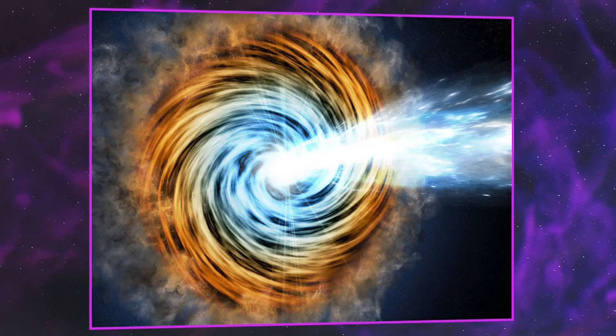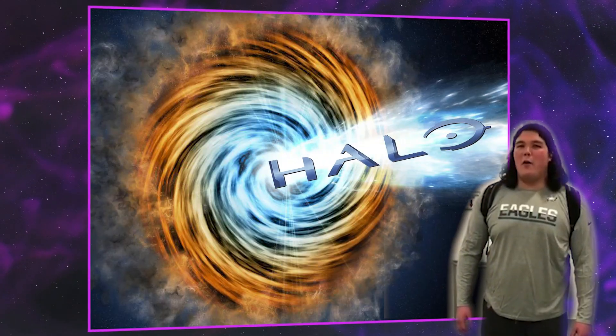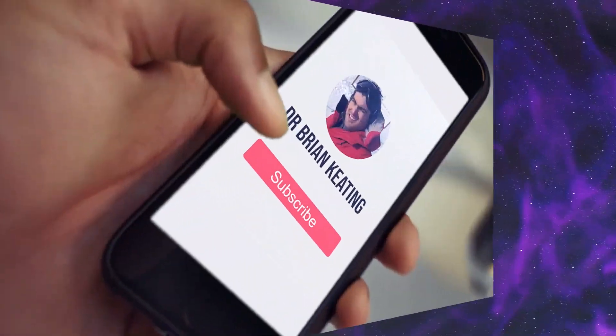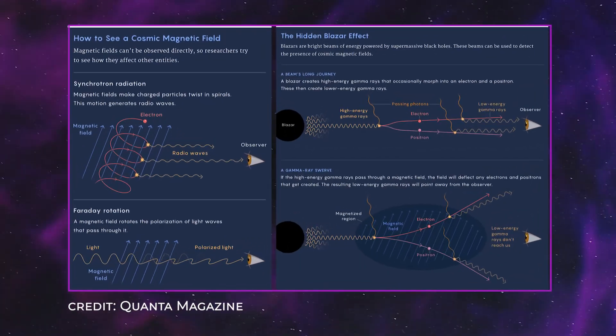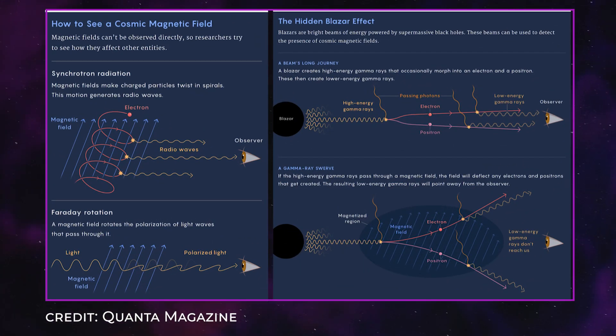These blazars will produce a halo due to positron-electron annihilation that we've talked about in other videos. But that phenomenon would lead to a burst of gamma radiation that we should see surrounding these distant objects. The fact that we don't observe these halos led to a lower limit on the amount of cosmic magnetic field energy present when these blazars are in their active phase.